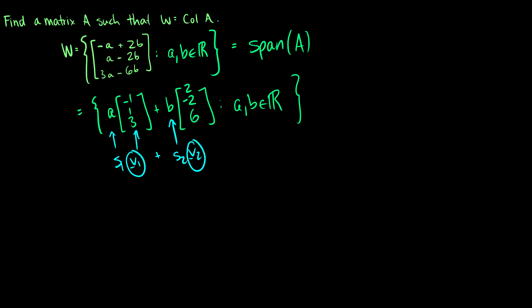So we can set our matrix A equal to V1, V2. So it is going to look like negative 1, 1, 3, 2, negative 2, 6.